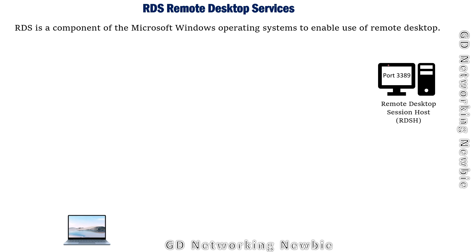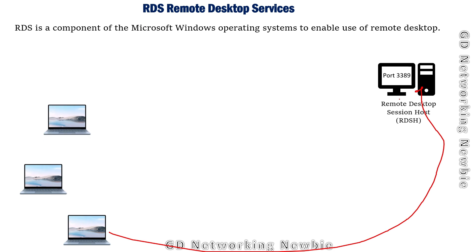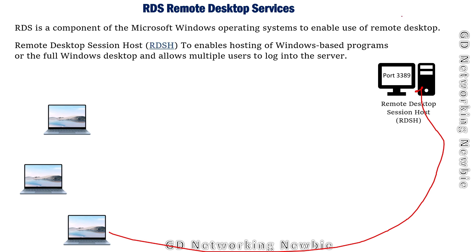Remote Desktop Services is used to enable remote desktop functionality in server machines. Any computer with a Windows operating system can provide desktop functionalities — for example, users from one computer can access this main functionality, and we can have multiple users from multiple computers accessing the same server configured with RDS.